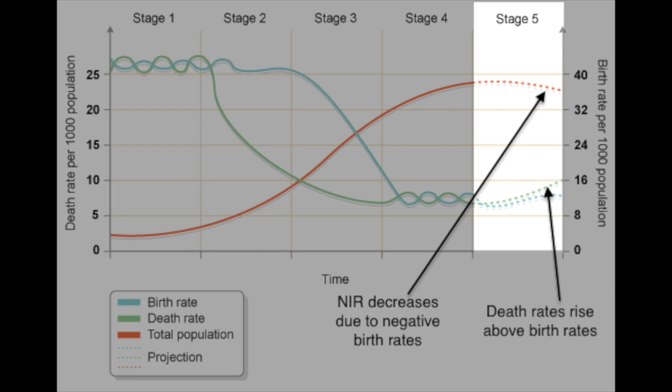We'll also sometimes see a stage five — not every textbook will have it, but when we look at stage five, these are countries where the birth rate has gone below the death rate, so they have a negative NIR. Their population is actually decreasing. Much of Europe is in this situation, especially Russia, Germany, and Italy, and Japan would also be included here. The reason stage five isn't officially added is that some people say it's a cycle and that birth rates will eventually go back up.